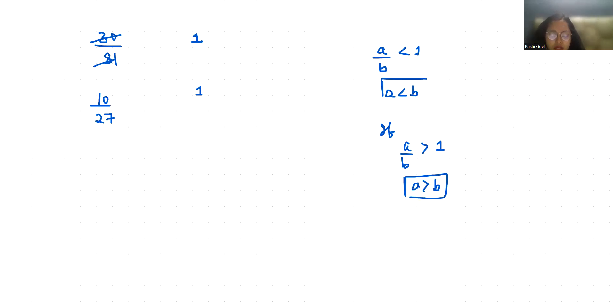Now in this case, if I take 10 as a and 27 as b, so 10 by 27 is less than 1.